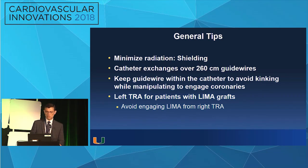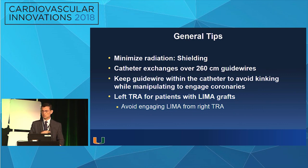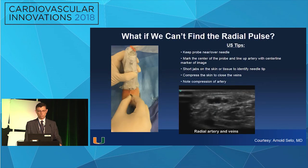Preserve the radial artery using patent hemostasis, full anticoagulation, ulnar counter-compression, and vasodilators at the end of the case. Always do catheter exchanges over 260-centimeter wires. Keep the guide wire within the catheter to avoid kinking — I've seen horrible kinking of guiding catheters requiring snaring the tip, which becomes a nightmare. Always use left radial access for patients with LIMA grafts. Don't try to go from one side to the other because you're going to be scratching the ascending aorta and potentially send debris up into the brain.